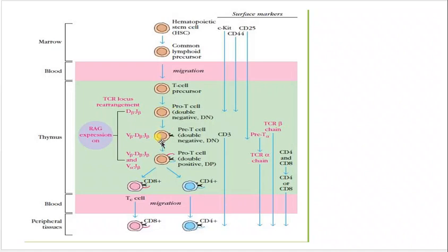The pro T-cell gives rise to the pre T-cell, and gene rearrangement continues. Genes such as V, D, and J segments undergo rearrangement. The cell remains double negative during this stage. When gene rearrangement is completed, the cell expresses the double positive receptor on its surface — meaning it contains both CD4 and CD8 receptors. At this point the cell becomes the double positive T-cell.